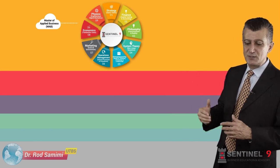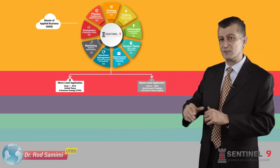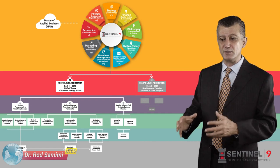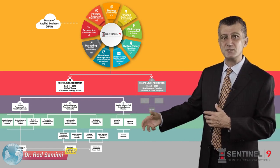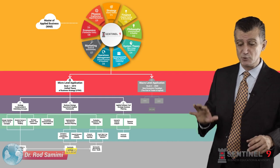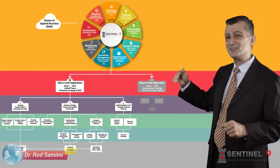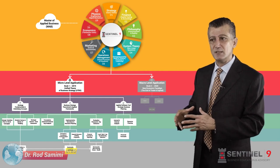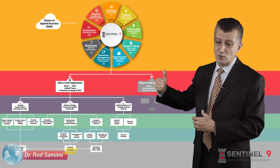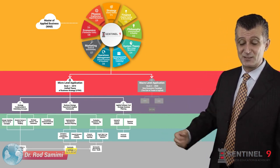In parallel, we've also decided to apply the Centeline 9 framework into two different contexts. A microeconomic context in the form of a book called the Unified Theory of Business Strategy — UTBS — at a firm and industry level. This book is published this year. We've also got an application of Centeline 9 into a macroeconomic context, embedded in a publication called the New Economic Paradigm: The End of Capital.